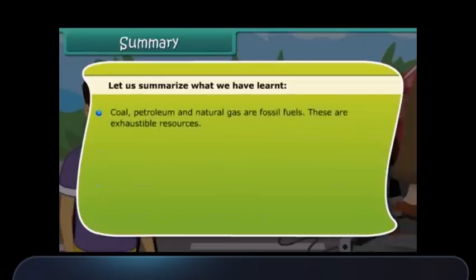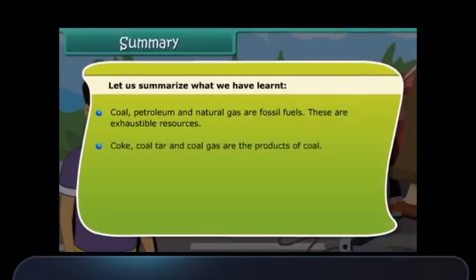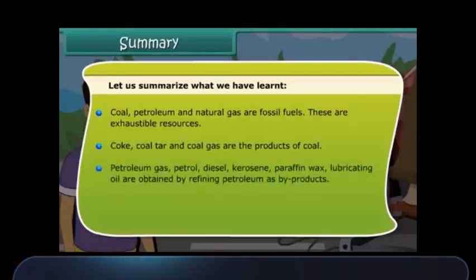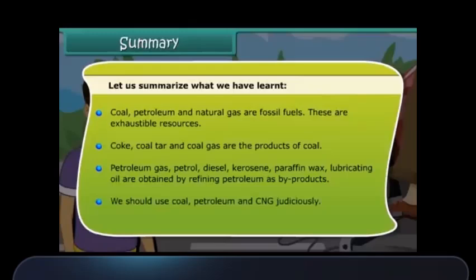Coal, petroleum, and natural gas are known as fossil fuels and are exhaustible resources. Coke, coal tar, and coal gas are all products of coal. Petroleum gas, petrol, diesel, kerosene, paraffin wax, and lubricating oil are obtained by refining petroleum as by-products. We should use coal, petroleum, and CNG judiciously.